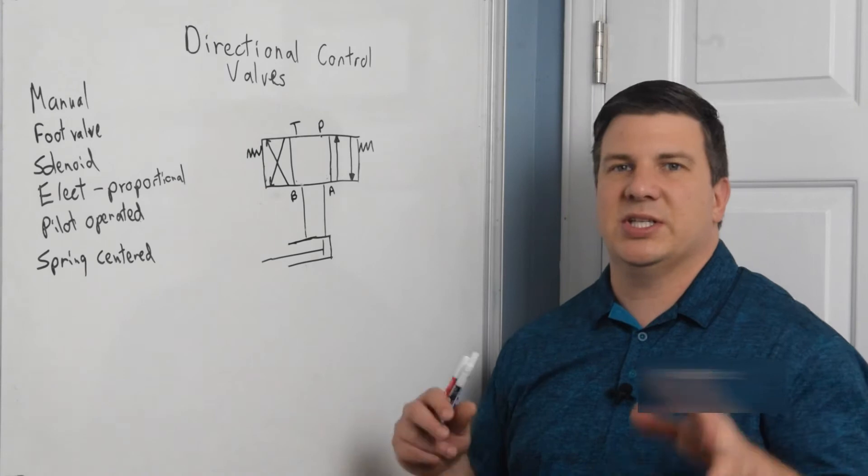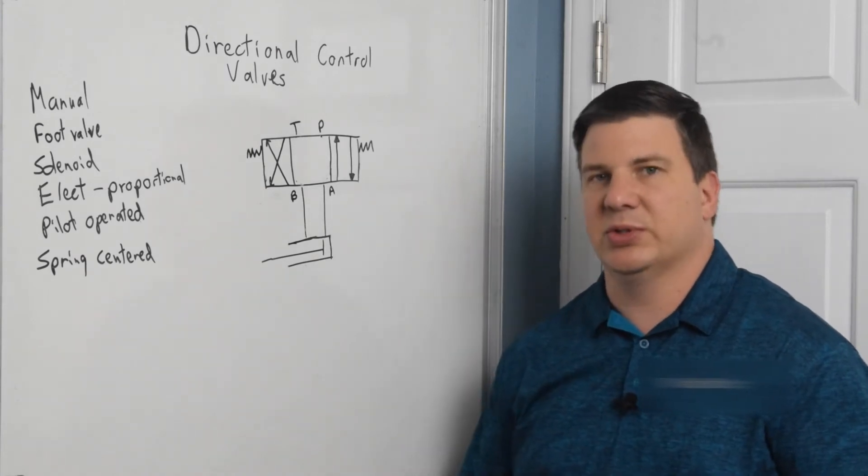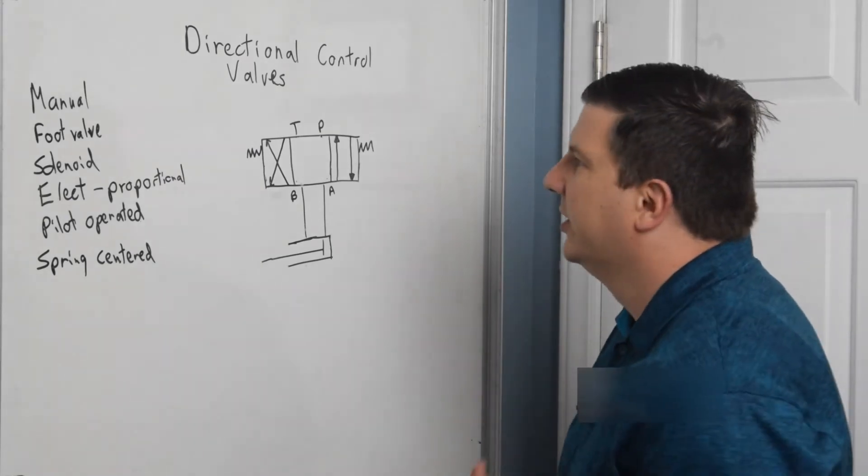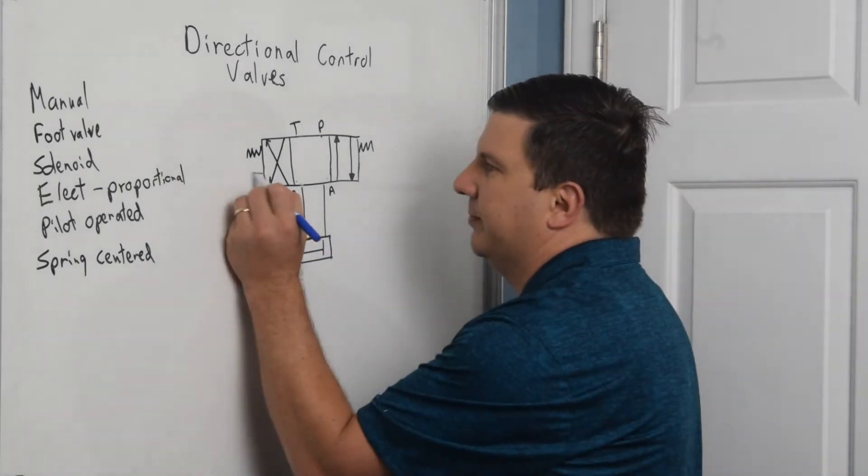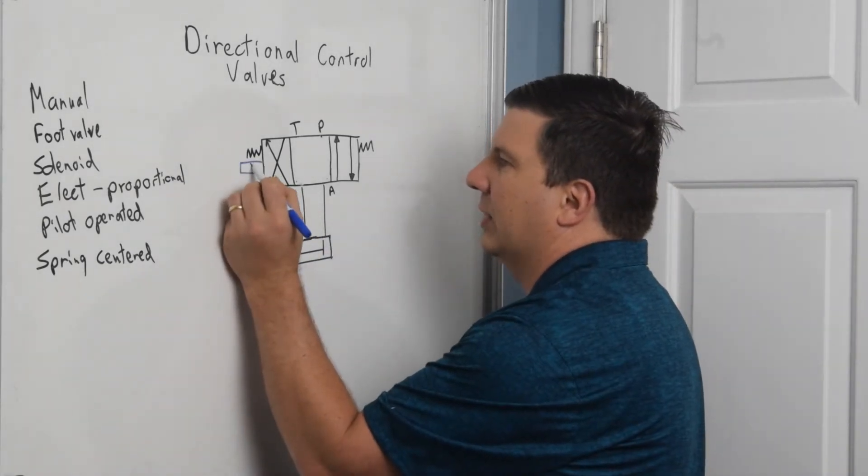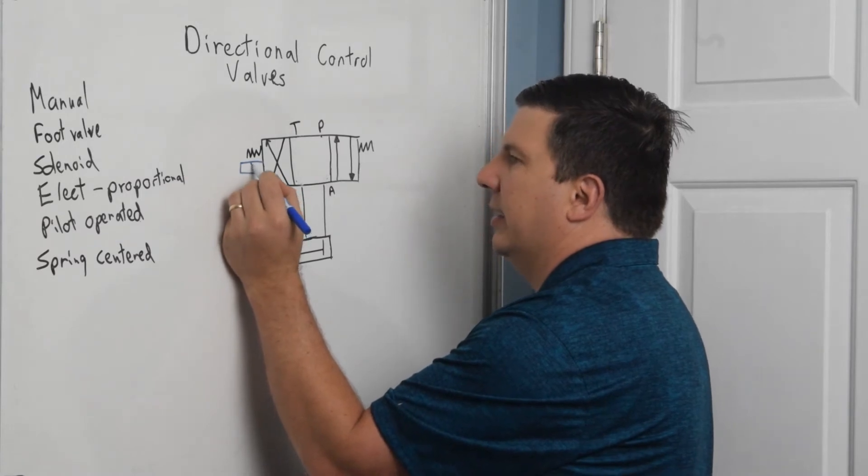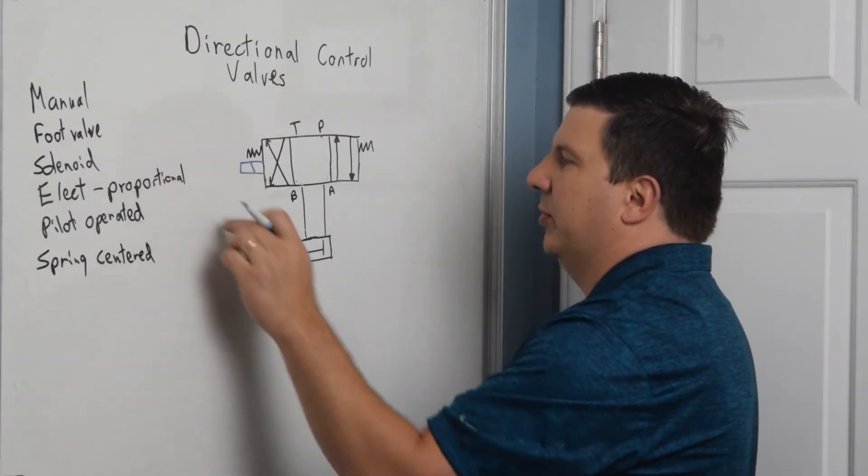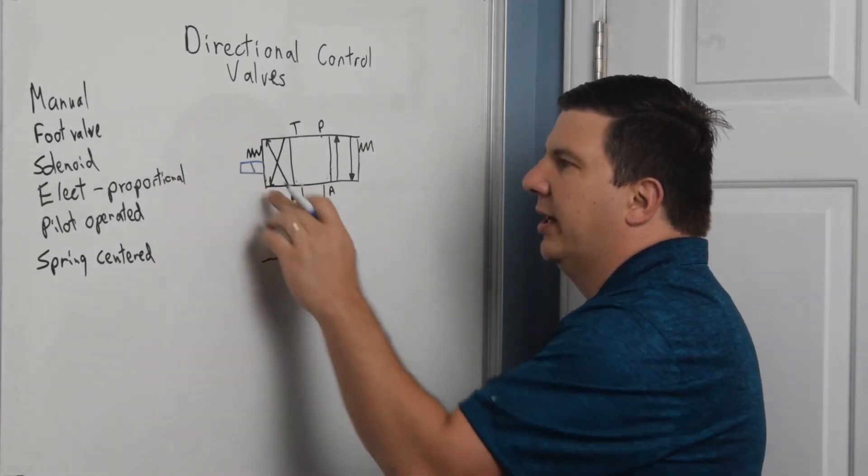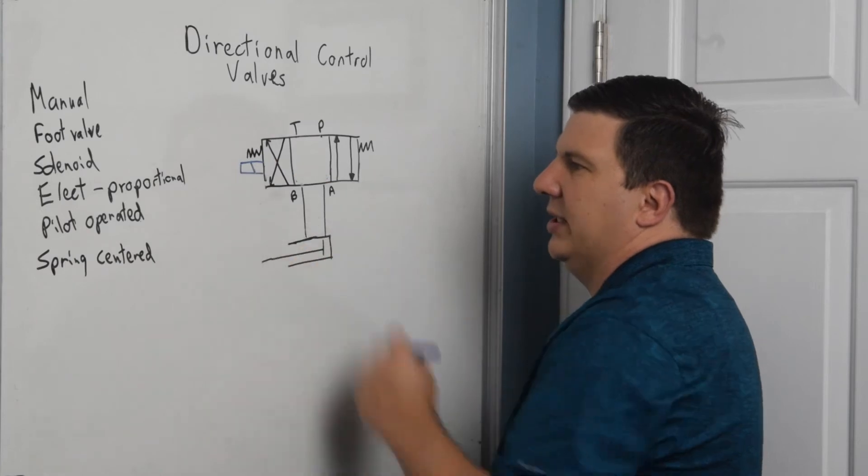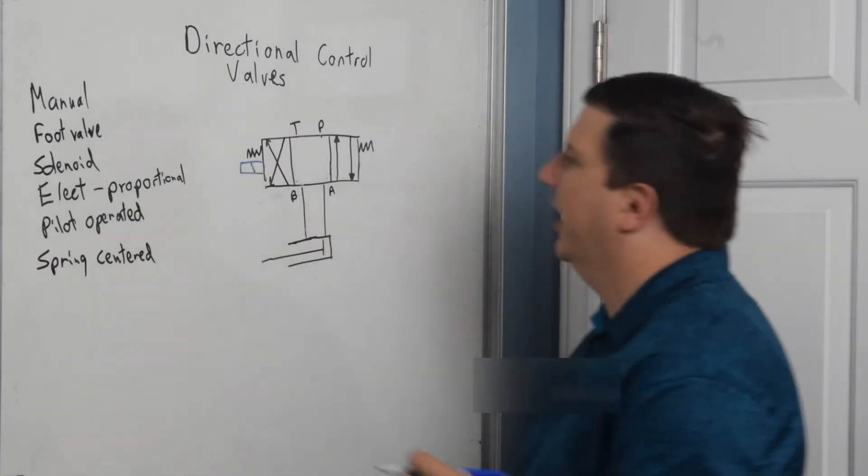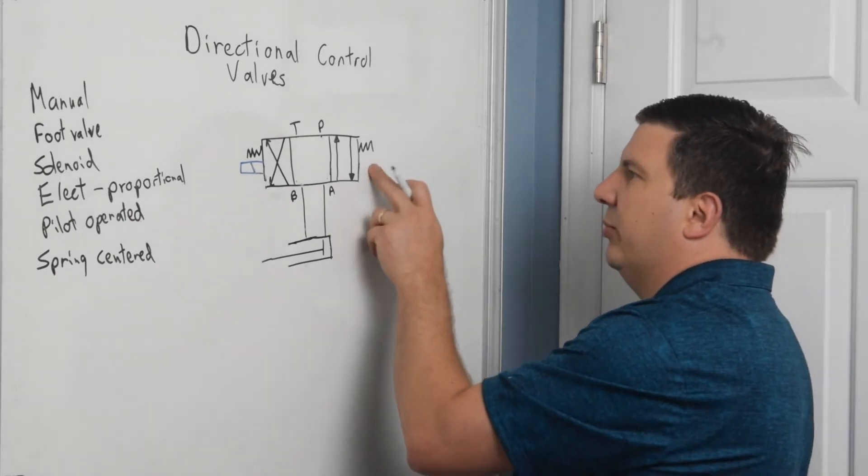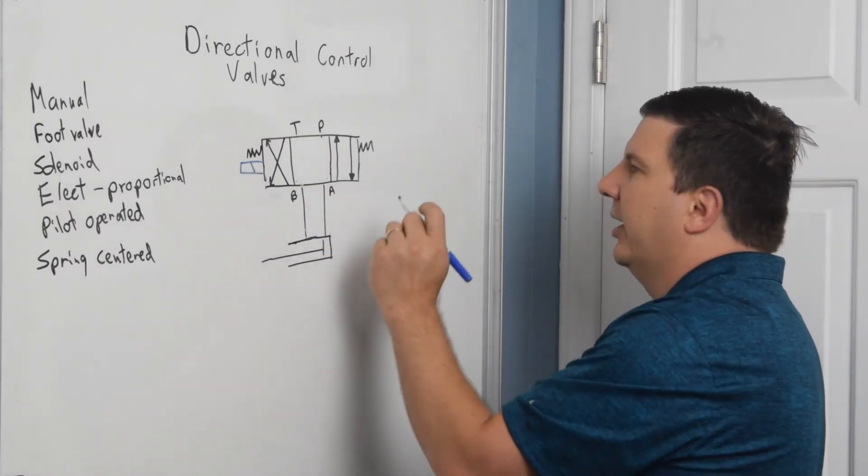So let's talk about symbols and how they are used to shift this. If I use a solenoid or electrical portion, these are both the same symbol. It's just a rectangle with a diagonal line drawn through. That means if I energize this, it's going to shoot that way. If I put one over here, it's going to shoot the other way.